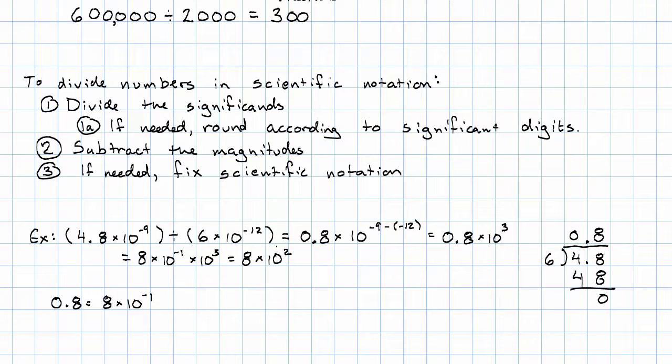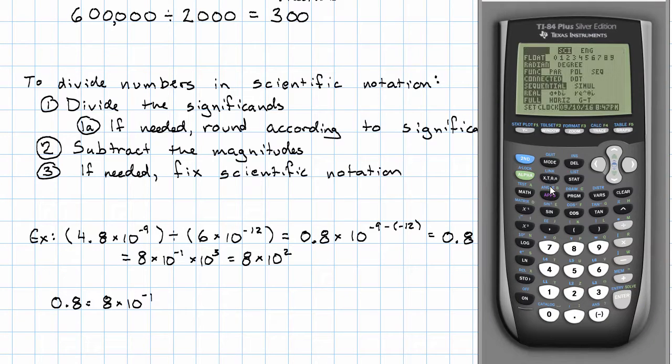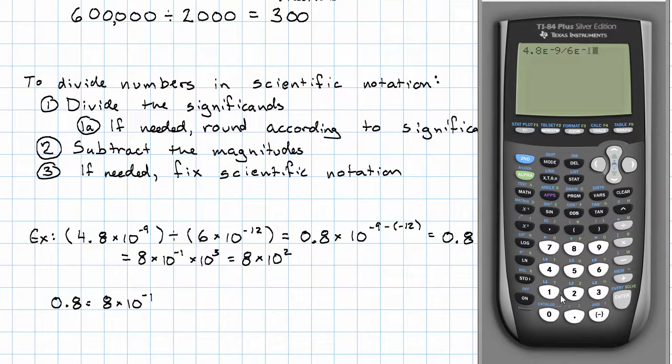Let's confirm that on the calculator. Making sure I'm still in scientific notation mode. I want to take 4.8 times 10 to the negative 5th divided by 6 times 10 to the negative 12th. And I do indeed get 8 times 10 to the sixth.